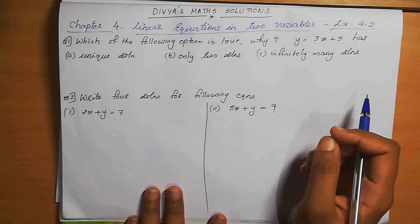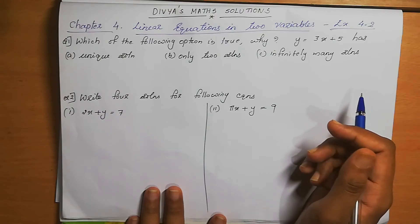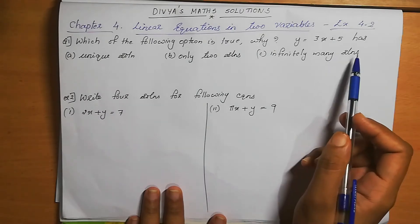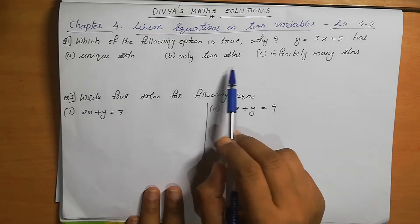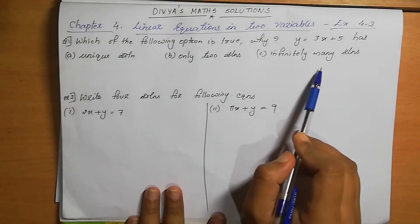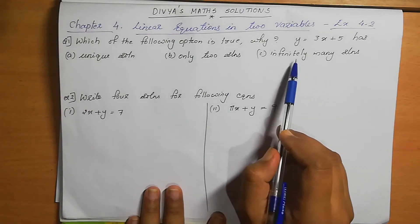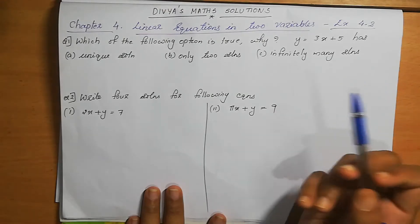Question number 1: Which of the following options is true and why? y equal to 3x plus 5 has: unique solution, only two solutions, or infinitely many solutions. A linear equation in two variables has infinitely many solutions.